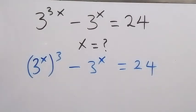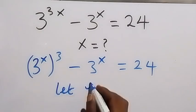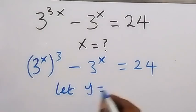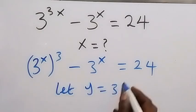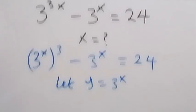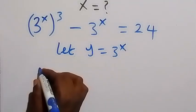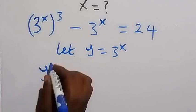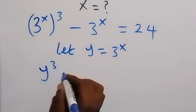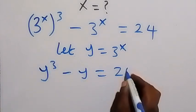We have 3 raised to power x here, so let's let y equal 3 raised to power x. Then we write this again in terms of y, and this will become y raised to power 3 minus y equals 24.